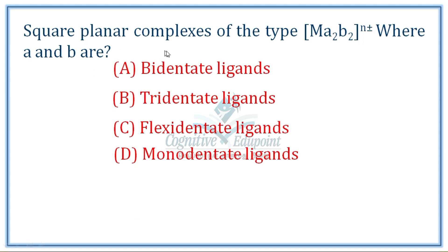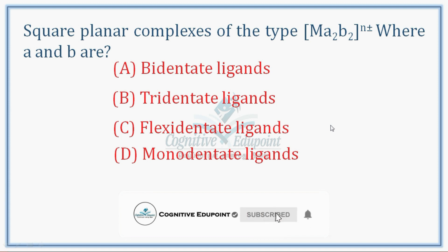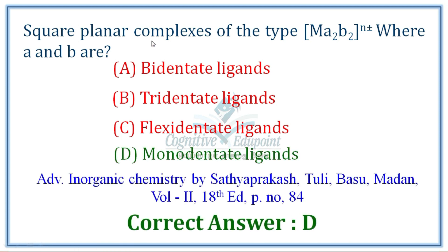Next question: square planar complexes of the type MA2B2 — where A and B are ligands with coordination number 4. Two different types of ligands are present. A and B are monodentate ligands. Ligands can be bidentate or tridentate, or even flexidentate depending on the situation. In this question, the correct answer is D — A and B are monodentate.